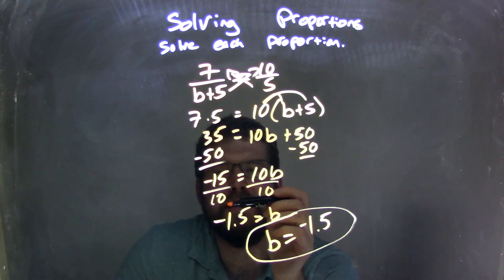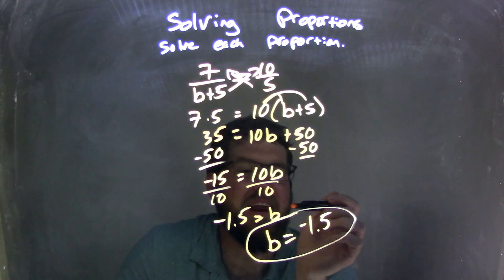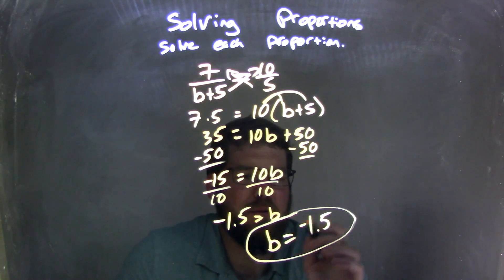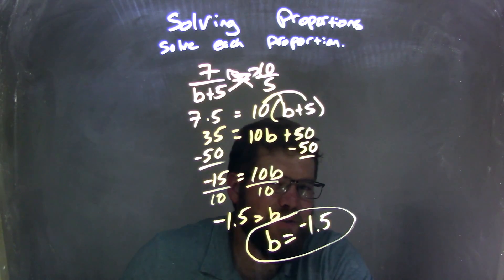We have negative 15 divided by 10, which is negative 1.5, and that equals b. But I wrote b first because that looks nicer, so b equals negative 1.5, and that is my final answer.